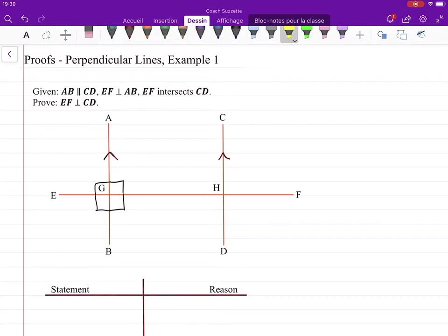And then we know that EF intersects CD. We know this goes through this line at some point, but what we need to show is that EF and CD are perpendicular, which means we need to show that right angles are formed here around that point of intersection.